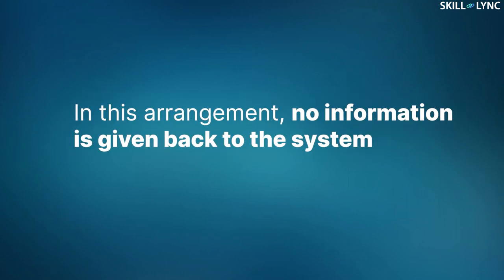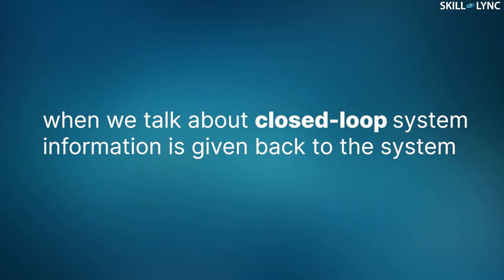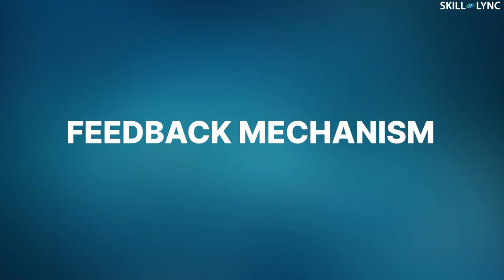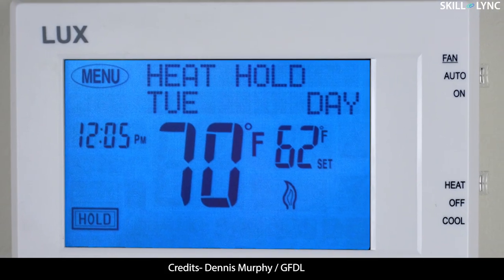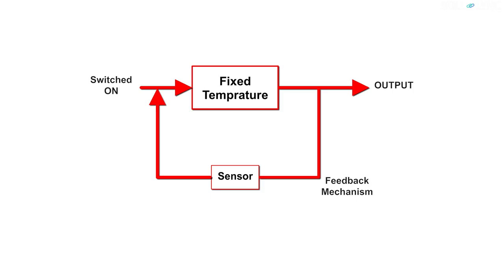In this arrangement no information is given back to the system. On the contrary, when we talk about closed loop systems, information is given back to the system. This is also termed as a feedback mechanism. Here let us take the example of a thermostat. We switch on a thermostat and fix a definite temperature.